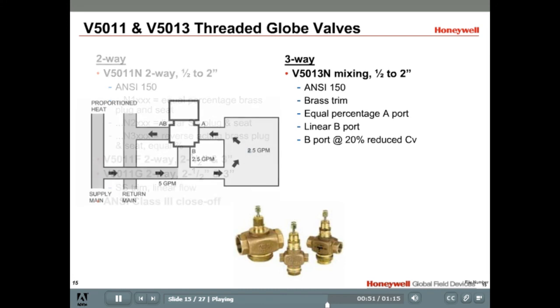The three-way mixing globe valves come with brass trim, and like most three-way valves, come with an equal percentage flow in port A and a linear flow in port B. Port B also has a 20% reduced CV compared to the A port. It is important to note that the V5013 three-way globe valves can only be used in mixing applications and not diverting.